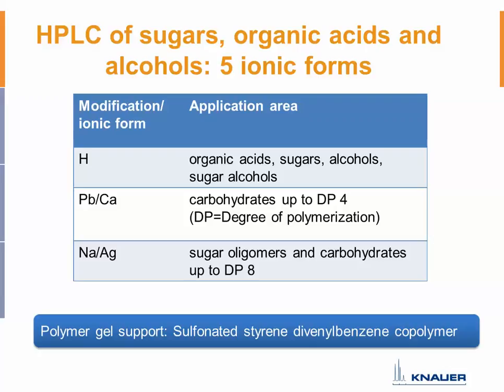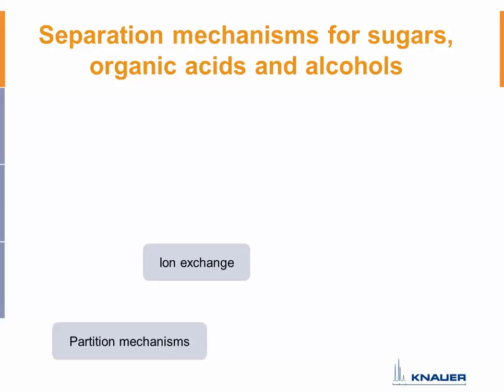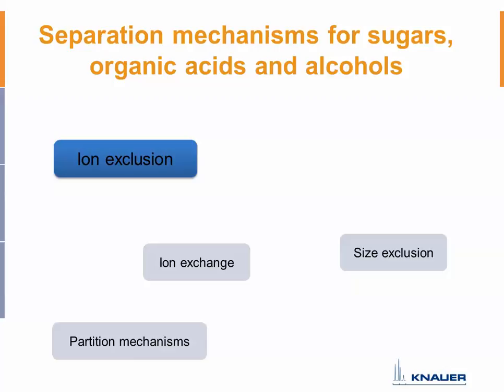What is the separation mechanism for these columns? It is really different from classical HPLC columns based on silica gel, because here you have a separation mechanism based on ionic species. It is not easy to define — it is always a mixture of different mechanisms. There is always a little ion exchange going on, some partition mechanisms working with your analytes and the polymer gel, and size exclusion occurs due to the cross-linking. But the two most important are the ion exclusion mechanism and the ligand exchange mechanism.